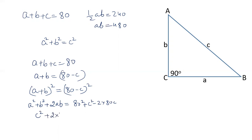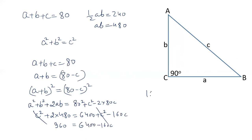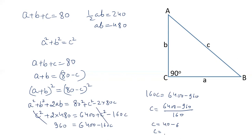The value of ab is 480, so 2ab equals 960. We write: c squared plus 960 equals 6400 plus c squared minus 160c. The c squared terms cancel from both sides. So 160c equals 6400 minus 960, which gives 160c equals 5440. Therefore the value of c is 34.